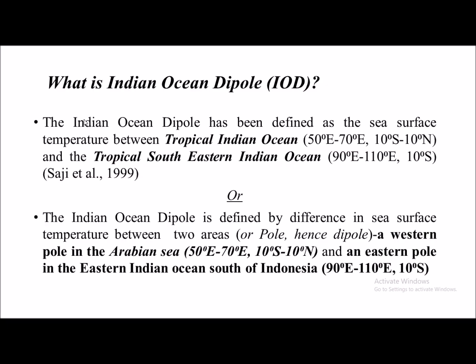The Indian Ocean Dipole was first observed by Saji et al. in 1999 in a classic paper in Nature. It has been defined as the difference in sea surface temperature between the tropical western Indian Ocean and the tropical southeastern Indian Ocean — that is, the difference in sea surface temperature between two areas or poles, as its name 'Indian Ocean Dipole' suggests.